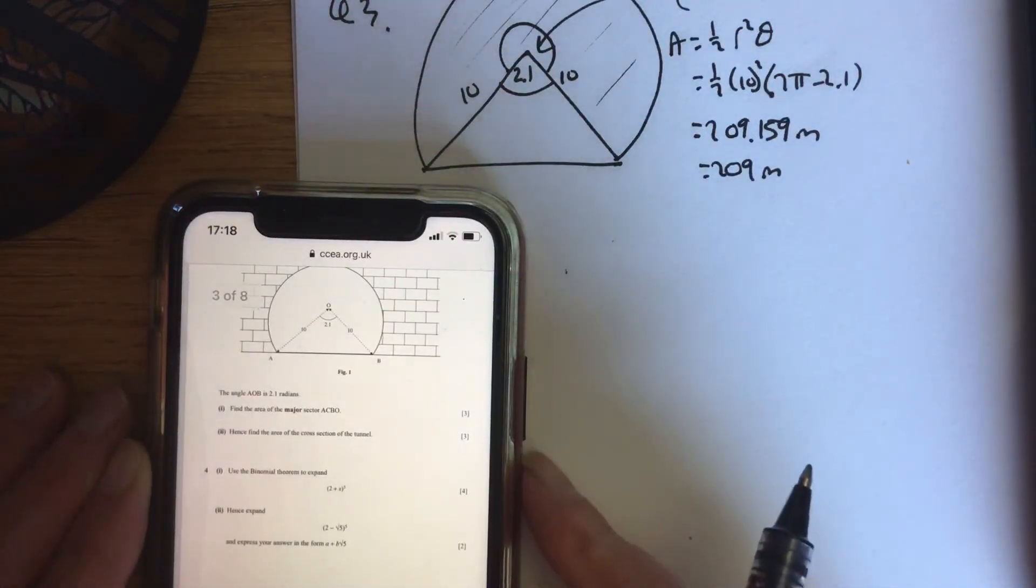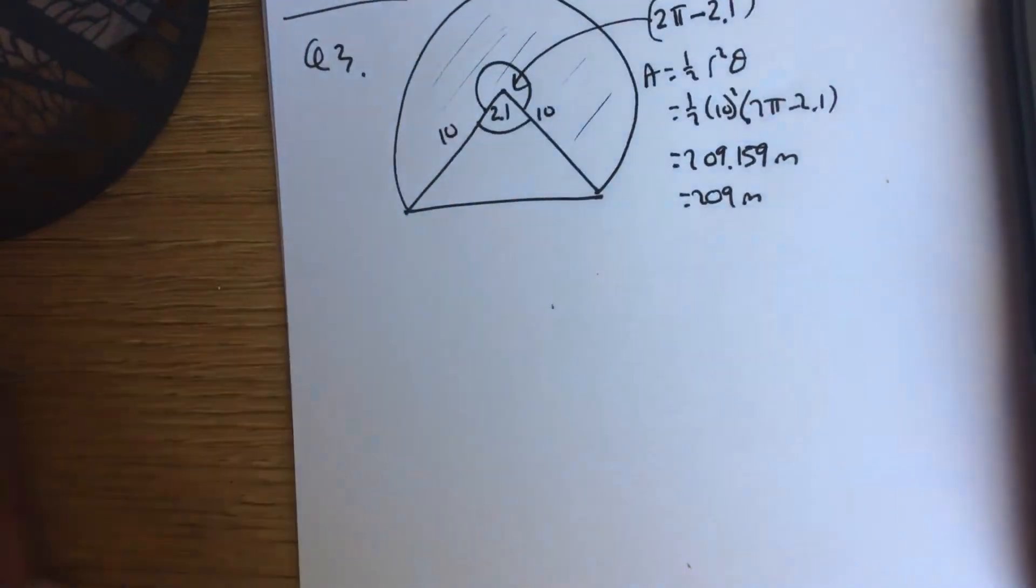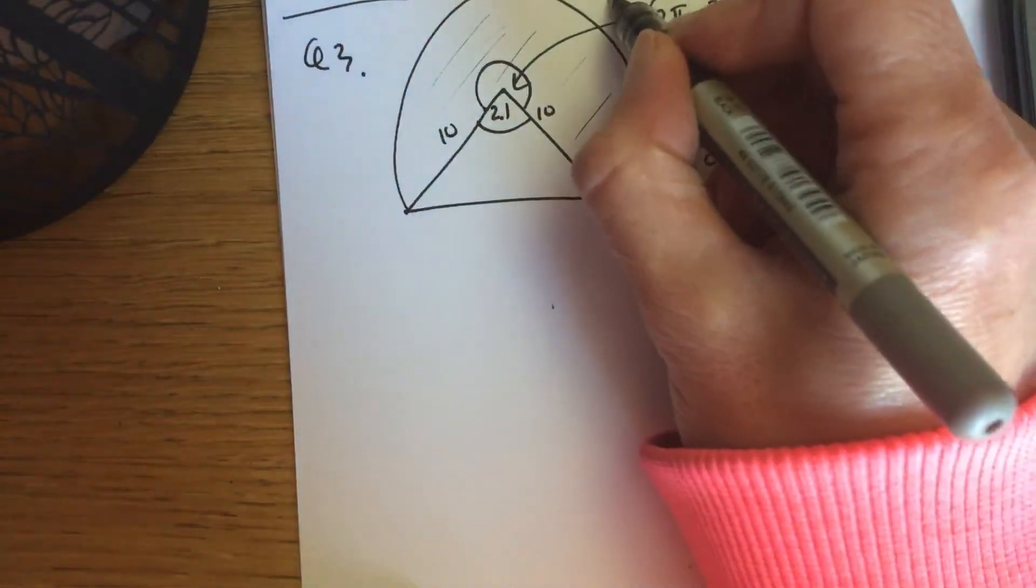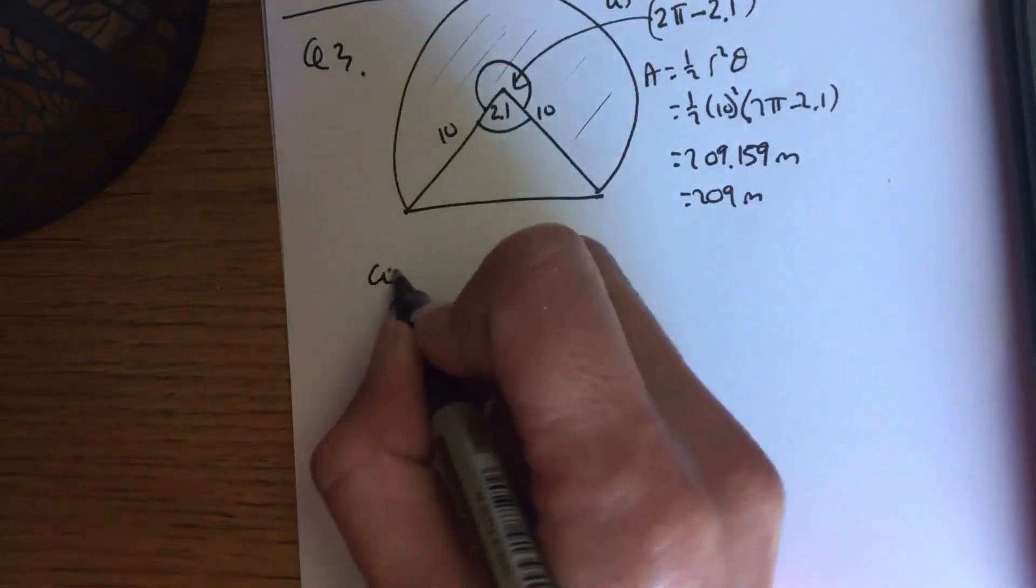Hence, find the area of the cross section of the tunnel. So now I've got to just basically find the area of the triangle. Just add the two together.